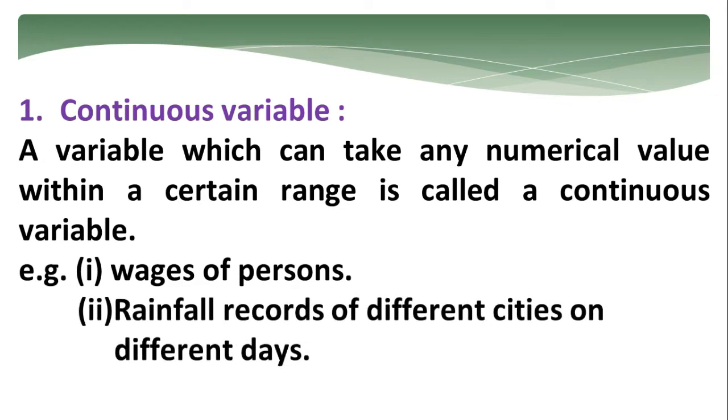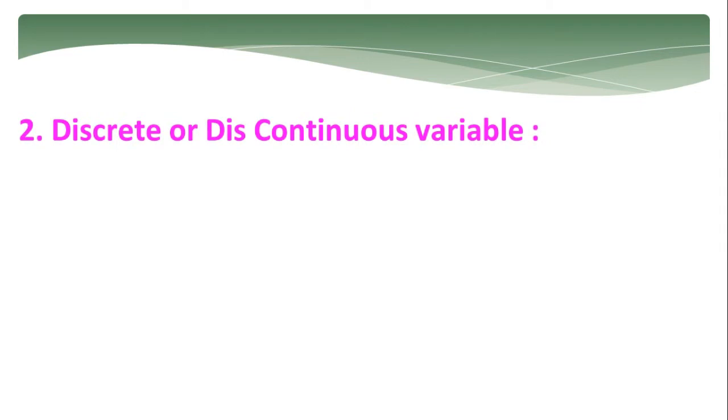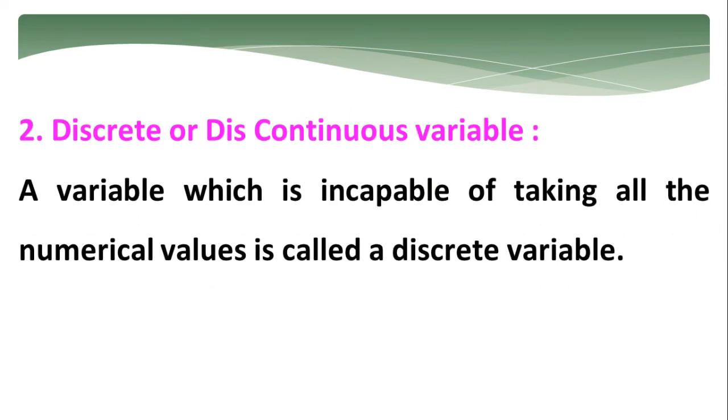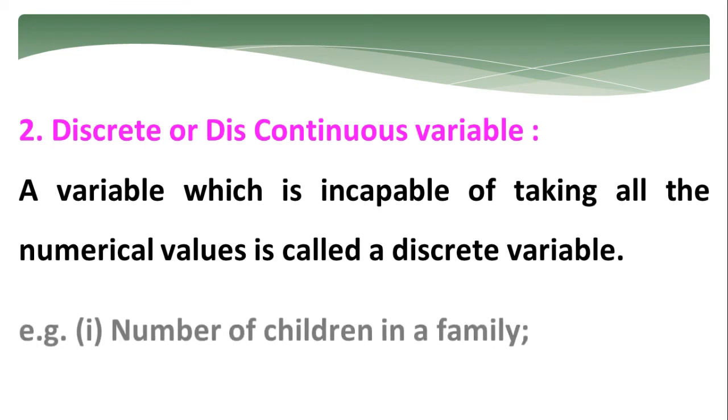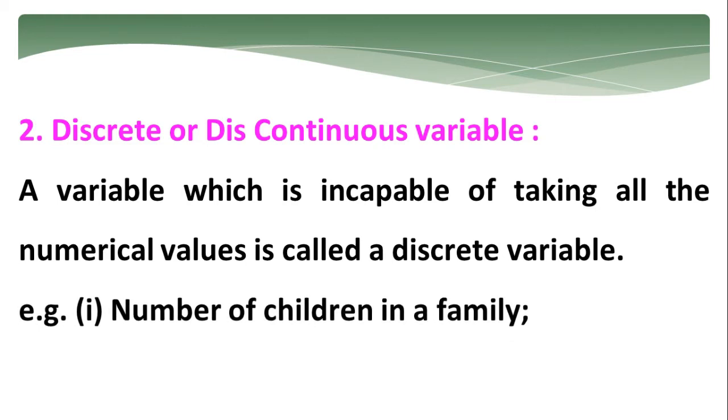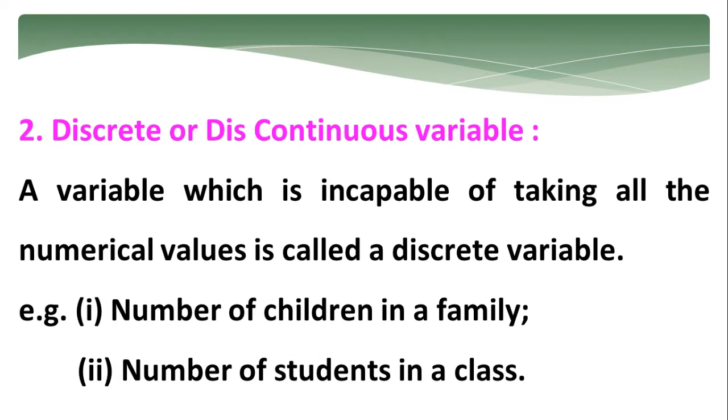The second type is known as discrete or discontinuous variable. Discontinuous variable means a variable which is incapable of taking all the numerical values is called a discrete variable. For example, it is number of children in a family, number of students in a class.